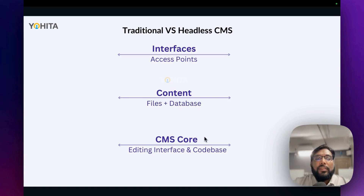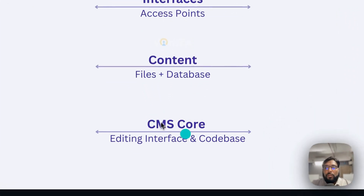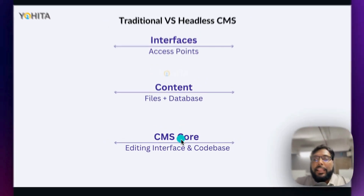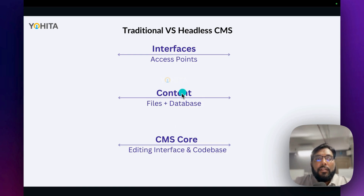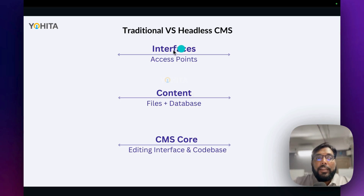A CMS or content management system typically consists of three main parts. The first part is the CMS code, which is basically the editing interface or code base of the core CMS system. The second part is user content, like user files, content collection tables, or a database. The third part is the interface or front-end, the access point for accessing that CMS.